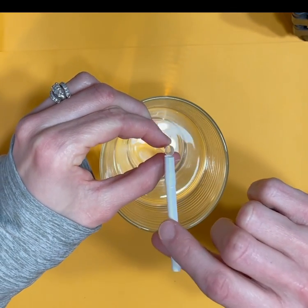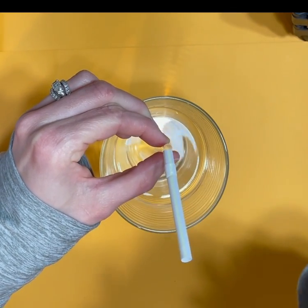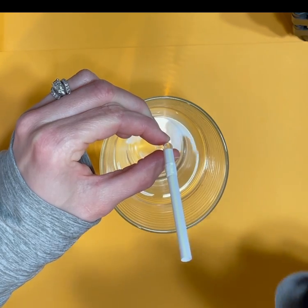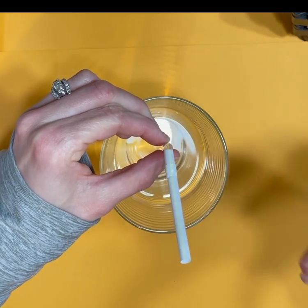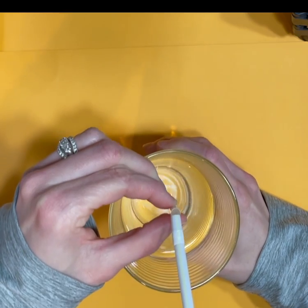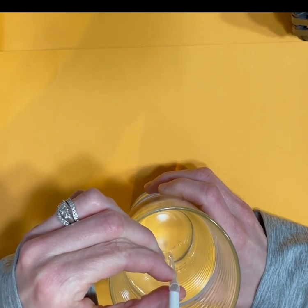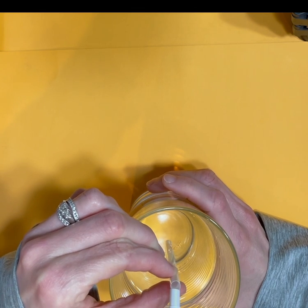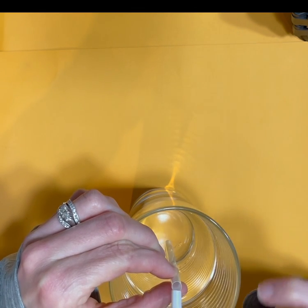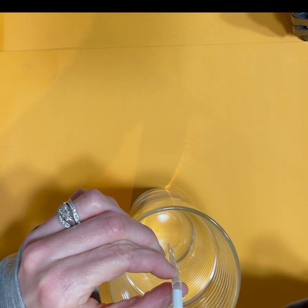So keeping your straw roughly at a 90 degree angle, mine's going to move a little bit, you're going to want to blow into the straw. Now I'm going to try this but I'm not really sure if you're going to be able to hear it. So it's a very light sound that it is creating but it is working, it is making a light whistling sound.